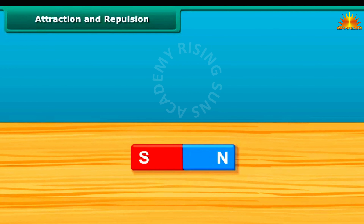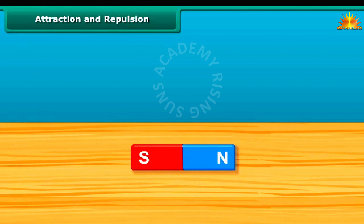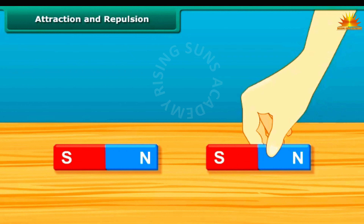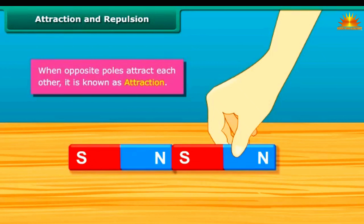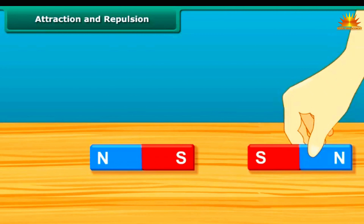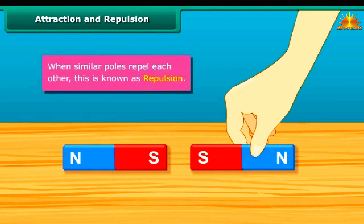Attraction and repulsion. Now that you know about poles of a magnet, let us look at the attraction and repulsion properties too. In the case of magnets, when the south pole comes in contact with the north pole, these get attracted to each other. This is better known as opposite poles attracting each other. Similarly, when the south pole comes in contact with another south pole of a magnet, they do not attract each other — in fact, they repel each other. This is better known as similar poles repelling each other.